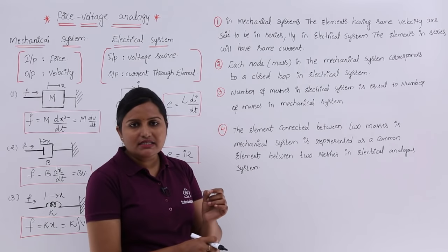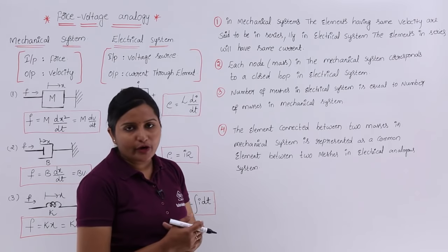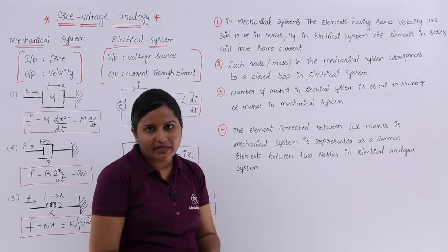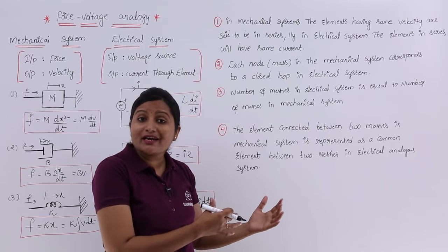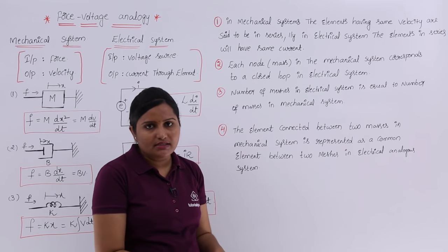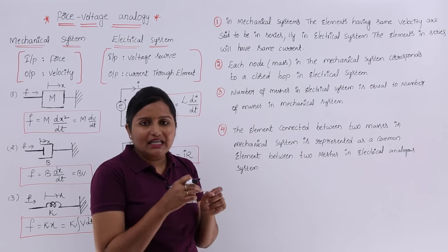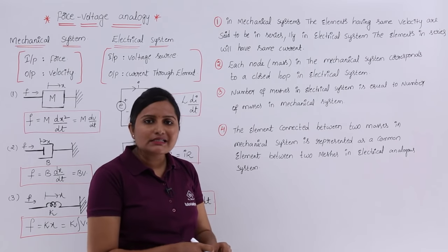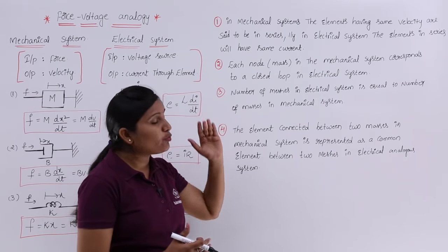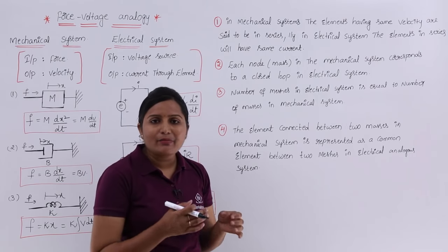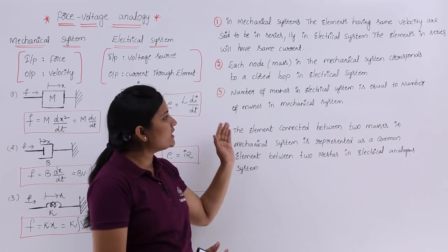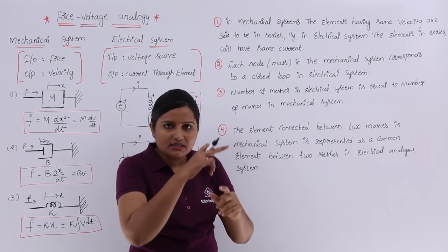Coming to the second point: each node — meaning the meeting point of different elements — in a mechanical system corresponds to a closed loop in the electrical system. Generally, the meeting point is the mass element in the mechanical system. So each node, or meeting point, or mass in the mechanical system can be considered as a closed loop in the electrical system.